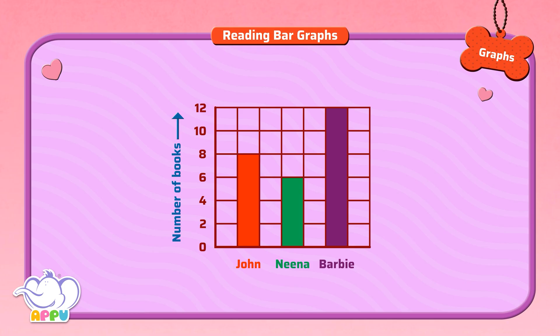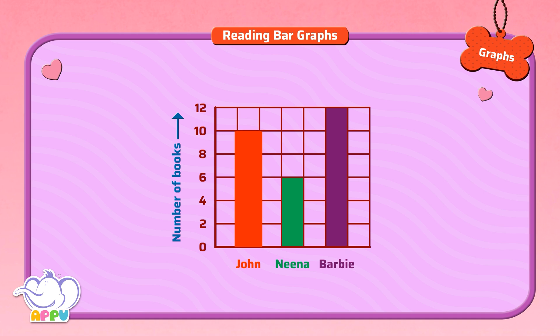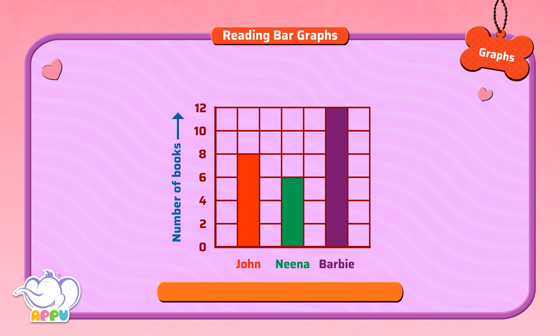In this bar graph, we have the names of the three friends at the bottom, and for every person we have a bar. Let's look at the bar graph and answer the questions given below. How many books has John read?